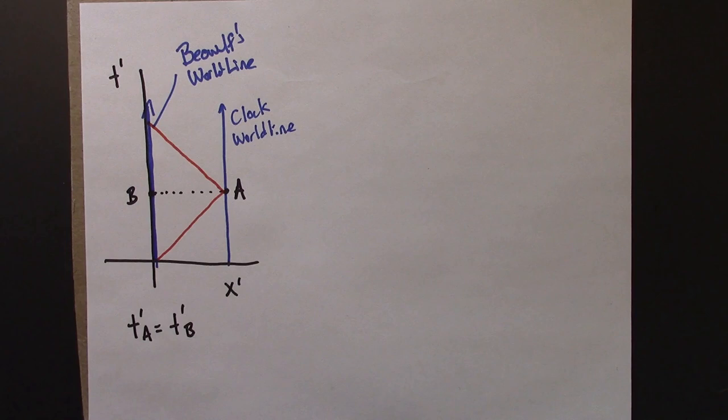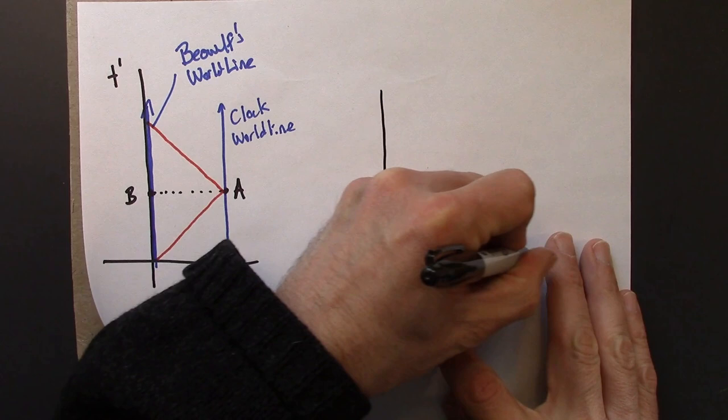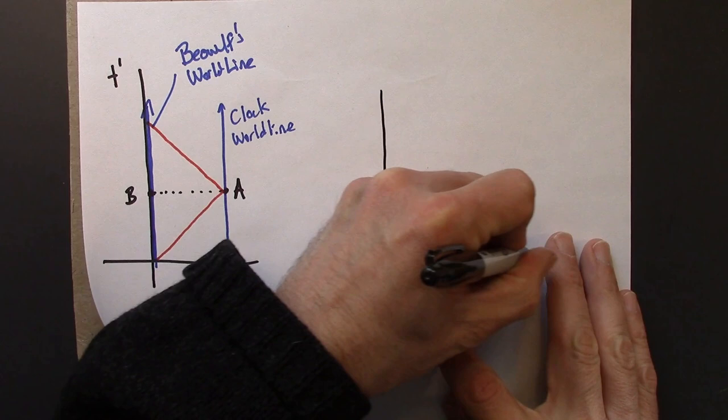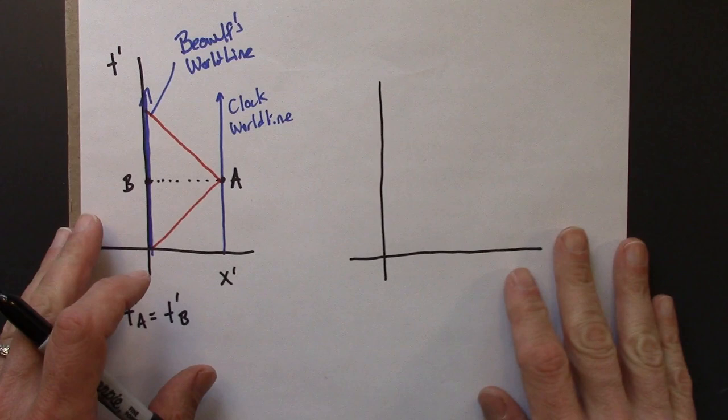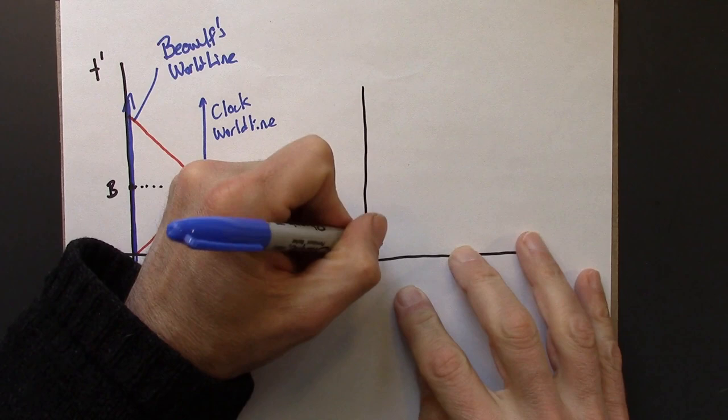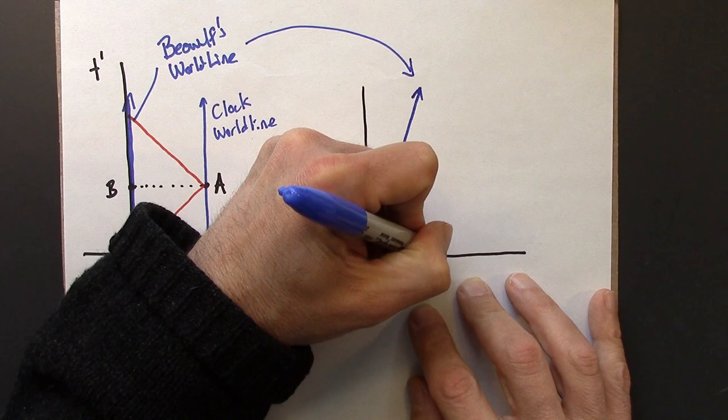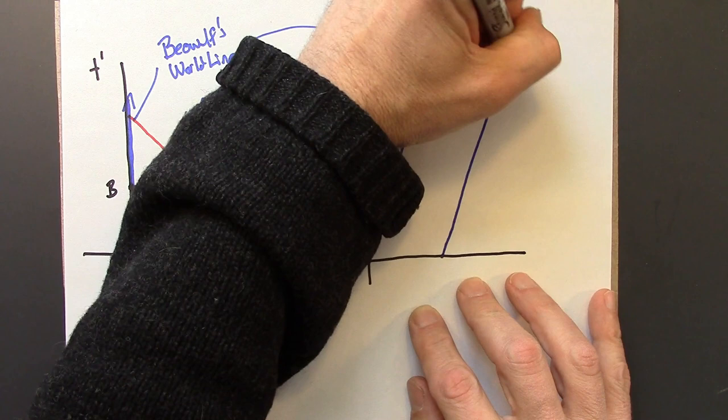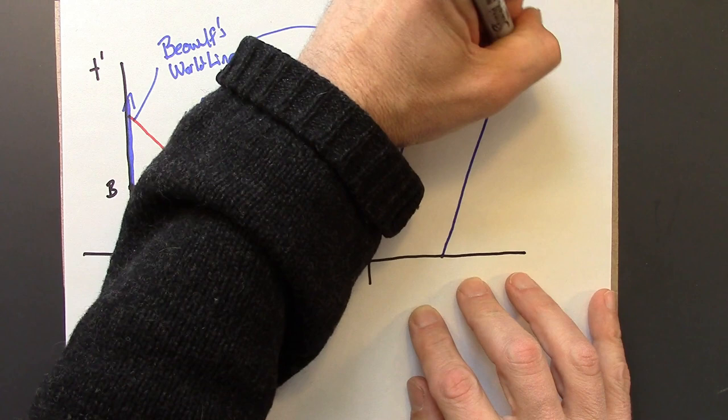Now let's look at the same thing from Anastasia's point of view. So Anastasia sees Beowulf moving left to right and sees Beowulf's clock moving left to right as well. And so those two world lines are no longer straight up because they're not at rest. So this is Beowulf's world line and then this is the clock world line.